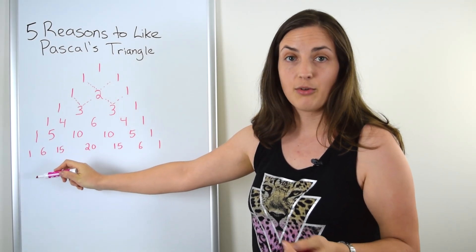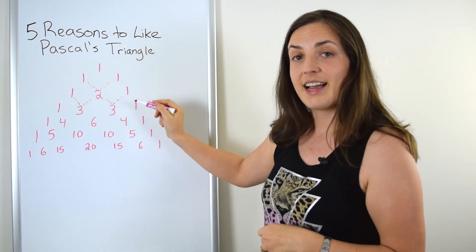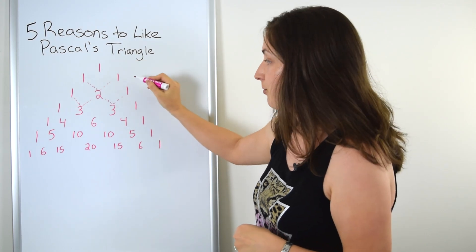The next diagonal just gives me the natural numbers: one, two, three, and keep going. The third diagonal gives me some very cool numbers. This right here.